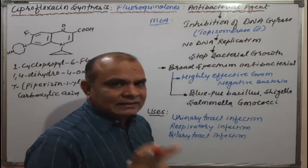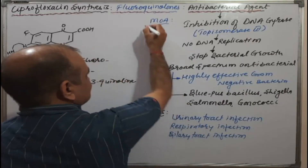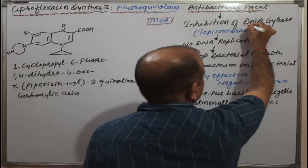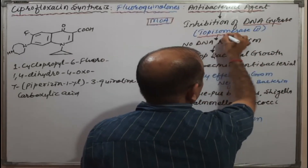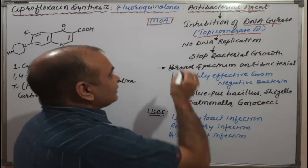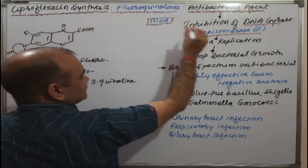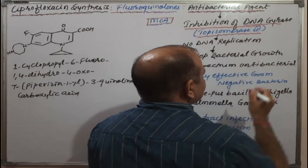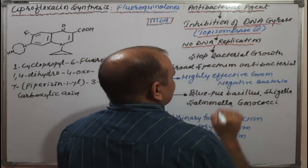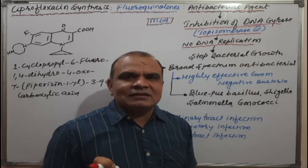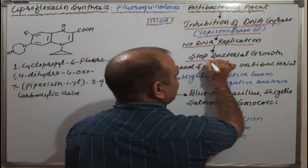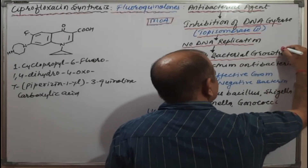Now, how is it antibacterial? Let's come to the mechanism of action. As you know, the DNA gyrase enzyme, also known as topoisomerase II, is involved in DNA replication. Ciprofloxacin inhibits the DNA gyrase enzyme, which results in no DNA replication. If there is no DNA replication, there will be no growth of that particular bacteria — meaning it stops bacterial growth.